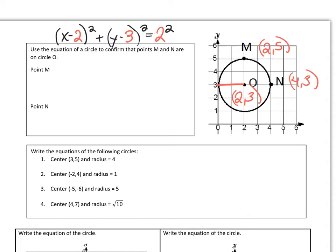Check it out. I'm going to substitute the point (2, 5) for x and y in my equation. Now I just need to see if this is true. Well, 2 minus 2 is 0 and 5 minus 3 is 2. So I end up with 0 plus 2 squared equals 2 squared.